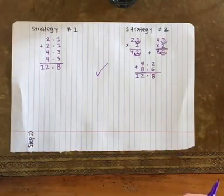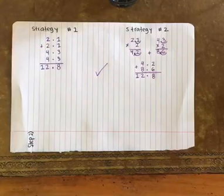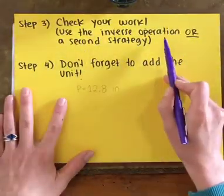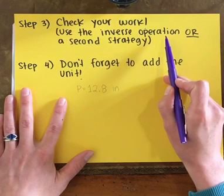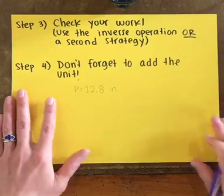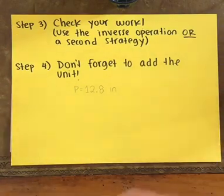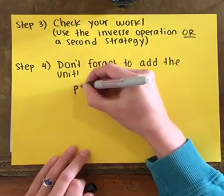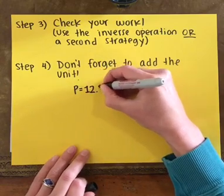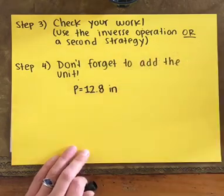I'm almost done. If you only used one strategy, you need to remember to check your work. You can either use the inverse operation, the opposite operation, or you can use a second strategy. Also, don't forget to add the unit. The final answer. The perimeter of my rectangle is 12 and 8 tenths inches.